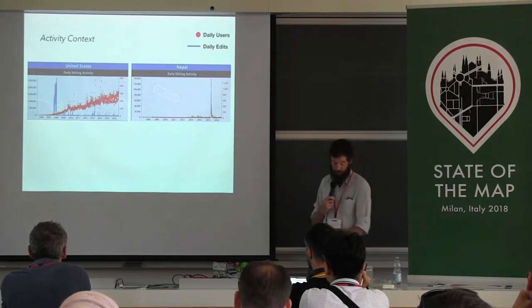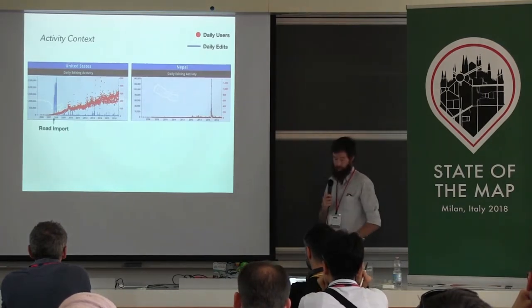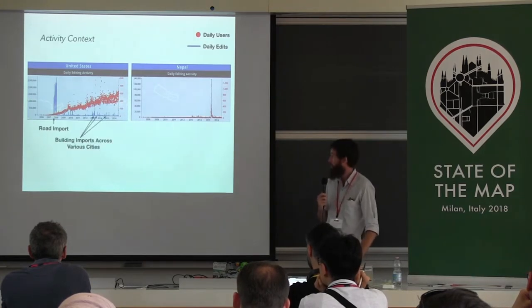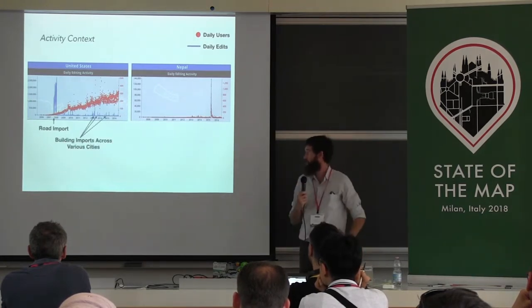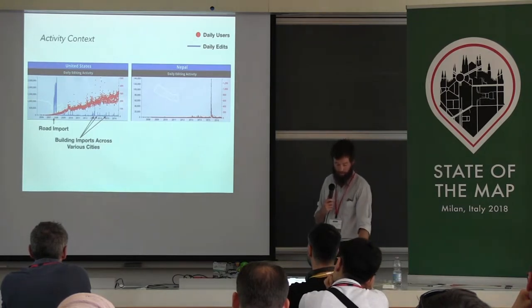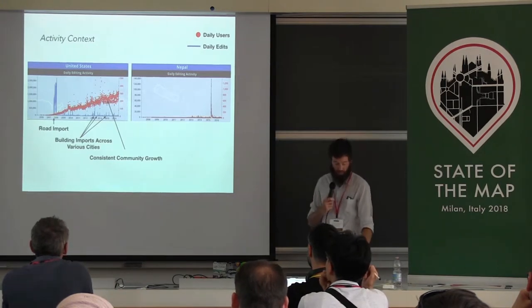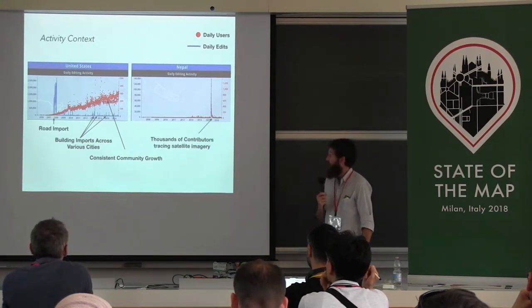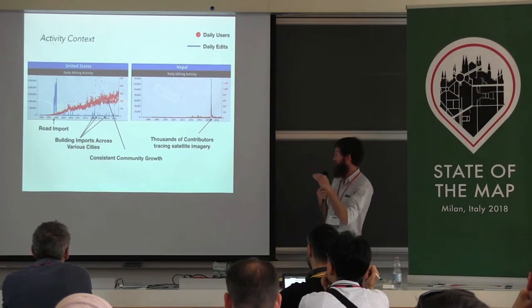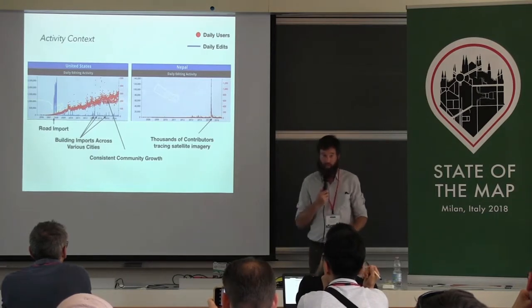Referring back to the histories of Nepal and the US, the map has grown through very different contexts. In the US, we first see the road import and then subsequent spikes as different imports occur across various cities — a lot of these are building imports — but there's been a consistent community growth since the beginning. Compared to Nepal, where there is an active local community, that activity is just totally dwarfed by the response to the earthquake.